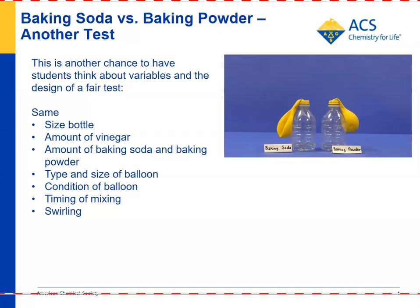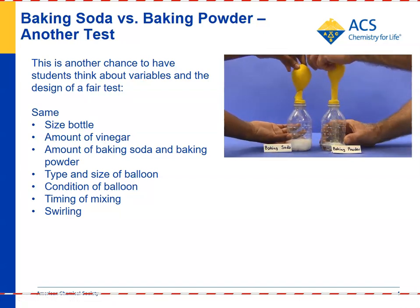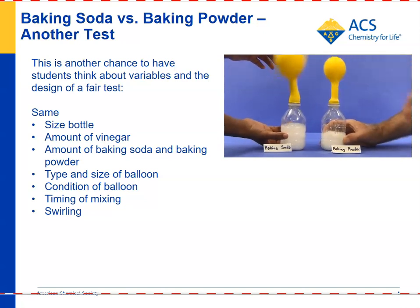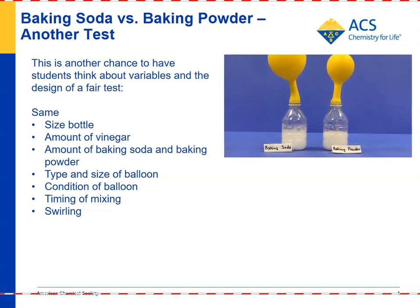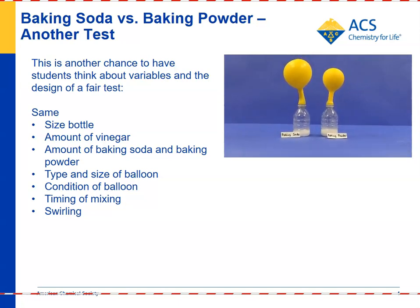In the extend part of the activity, you first add vinegar to each of two empty disposable water bottles — those little 8-ounce bottles. Then you put baking soda in one balloon and baking powder in the other, and attach the ends of the balloons to the bottles. When you're ready, you would ask students to predict which one will inflate more, and they should say baking soda. The baking soda does produce more gas — you can see that it inflates the balloon better than the baking powder, and that's what students should have expected.